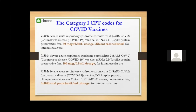We have three category one CPT codes for the COVID vaccine: 91300, 91301, and 91302. Each is differentiated by dosage — 30 MCG per 0.3 ml, 100 MCG per 0.5 ml, and 5×10¹⁰ viral particles per 0.5 ml dosage respectively. All three are given by intramuscular use.